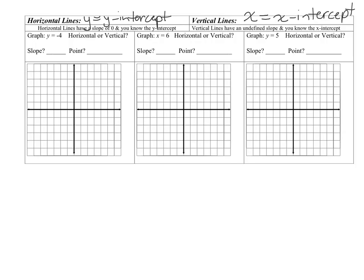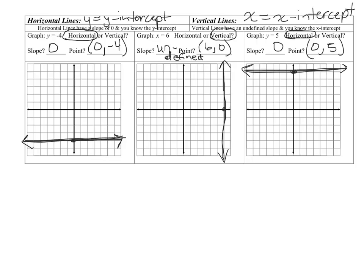The first example is y equals negative 4, which means it's a horizontal line since it's in y equals form. The slope is zero, and the point it goes through is zero, negative 4 — but you can say any ordered pair where the y-value is negative 4. So go down 4 and graph a horizontal line. Now stop the video and do the next two. One reminder: do not abbreviate the word 'undefined' — you have to know that word.